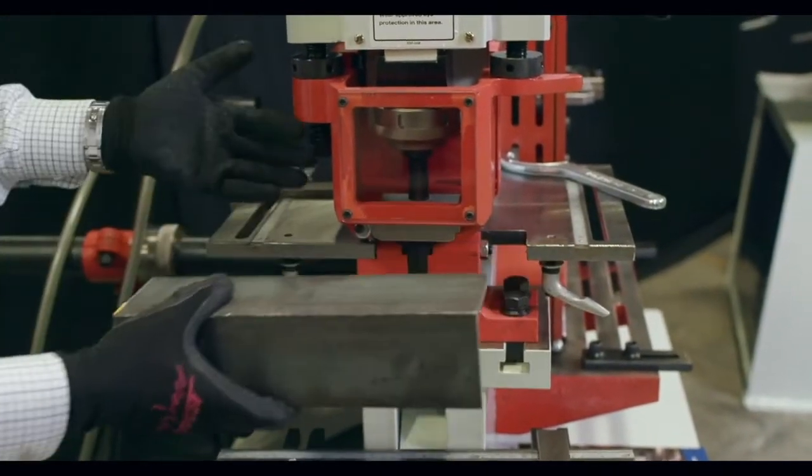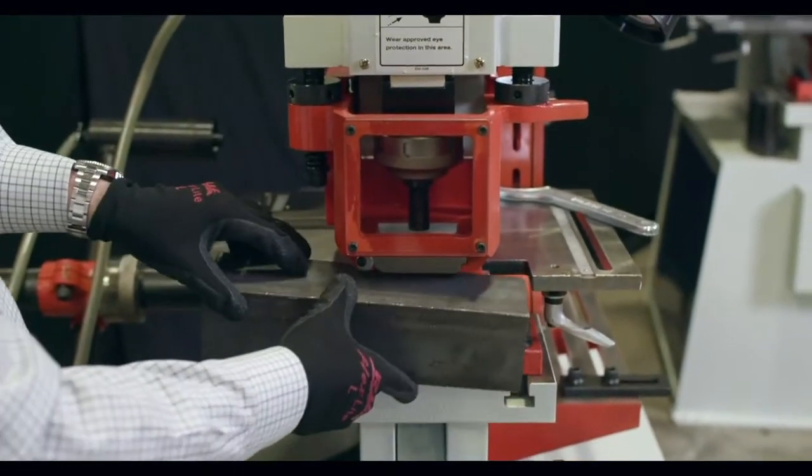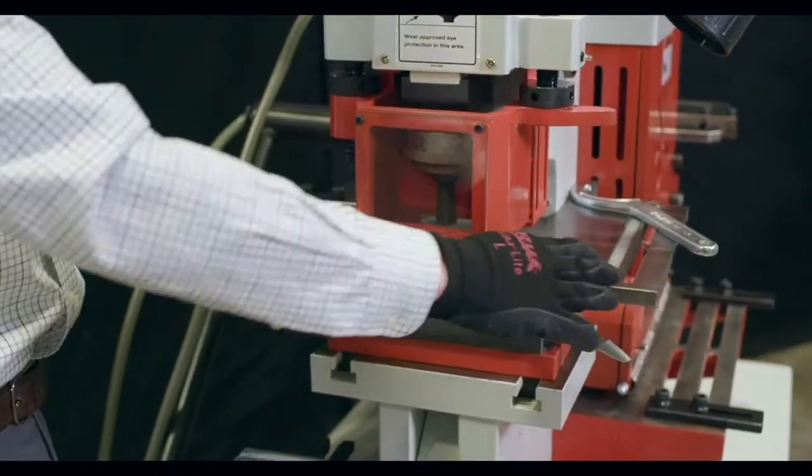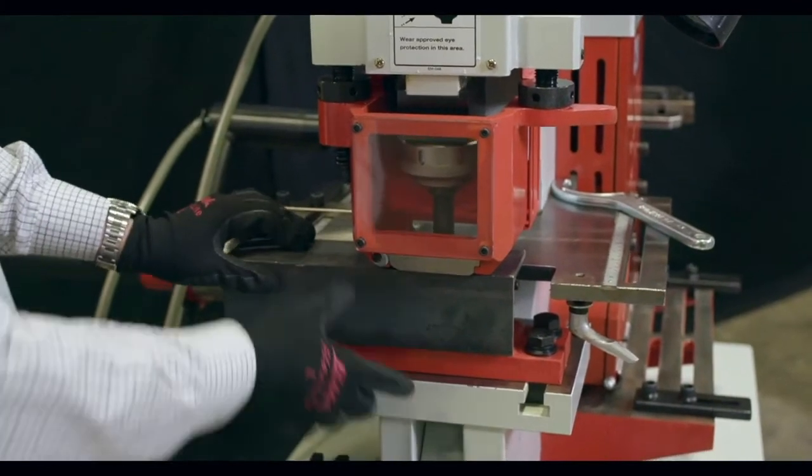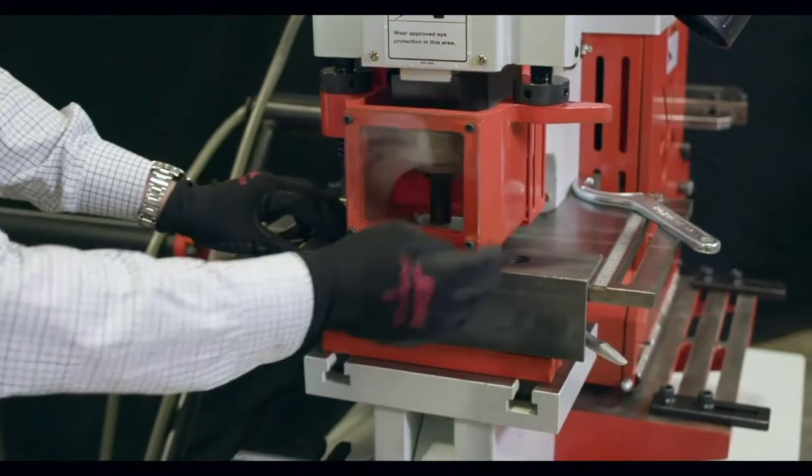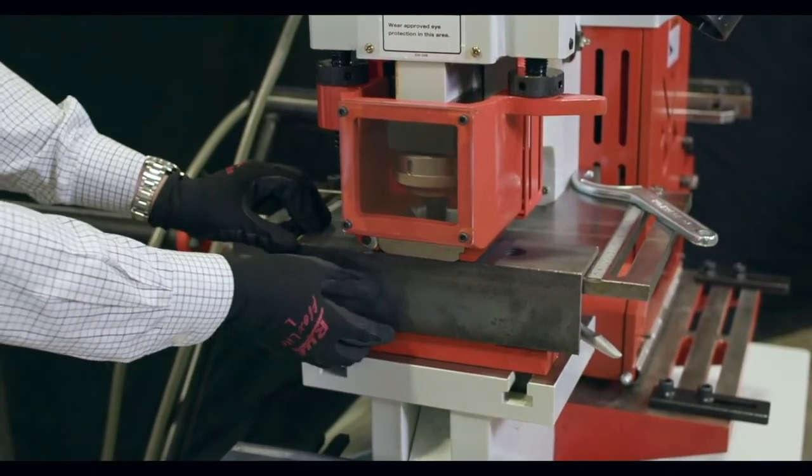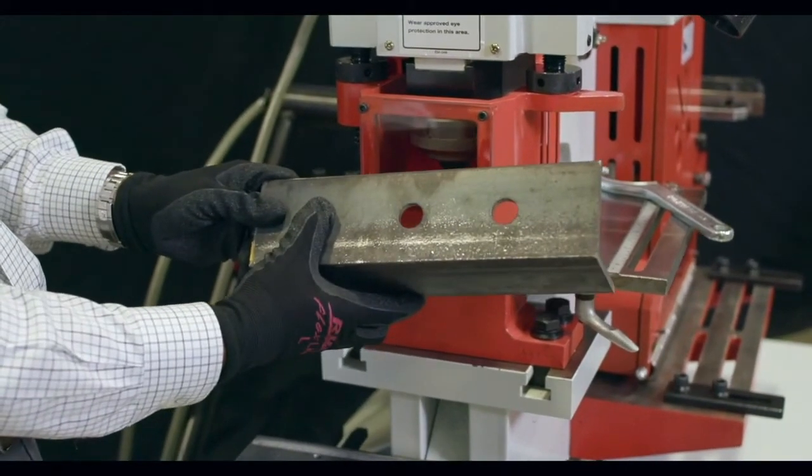That will also allow us to do flat bar. We do have different die blocks for channel. But if I slide that angle in there, I have adjustable guide bars and gauges on either side. And I can come down and punch that hole out. And if I had a clip, I could just move it along to my preset positions and just nice and easily process that angle clip.